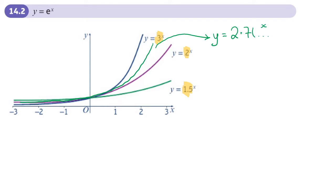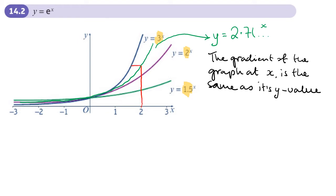What's special about this graph is that the gradient of the graph at x is the same as its y value. Let's take a point here. If the y value was 10, then the gradient at that point would be 10. Let's take another point. If at this point the y value is 5, the gradient would be 5. This is what I mean by its y value is the same as the gradient.